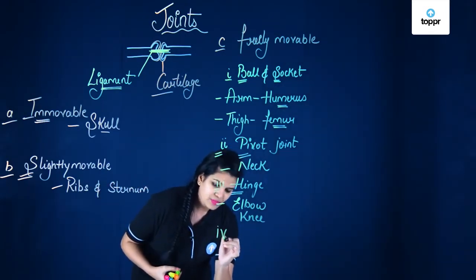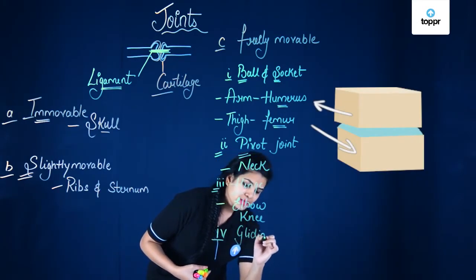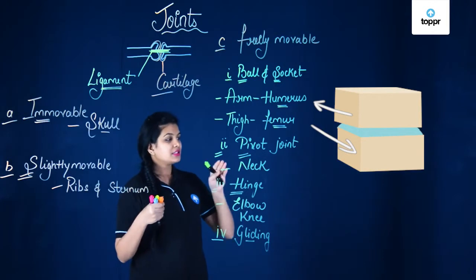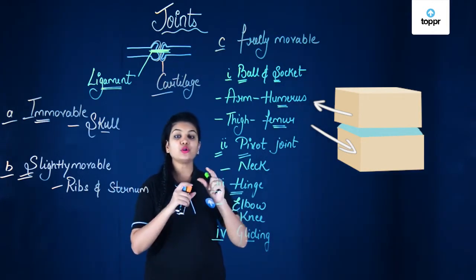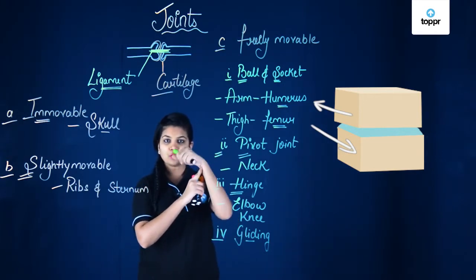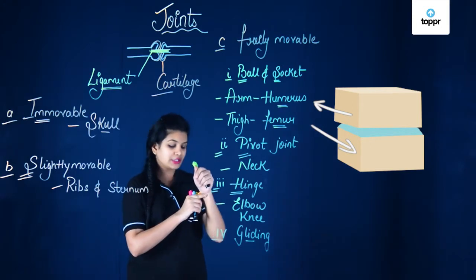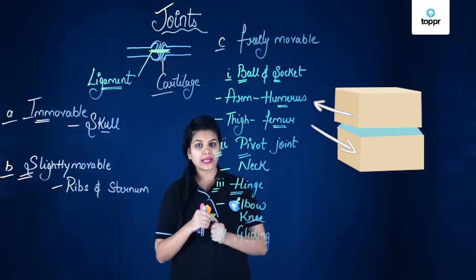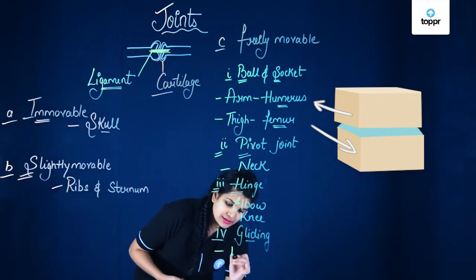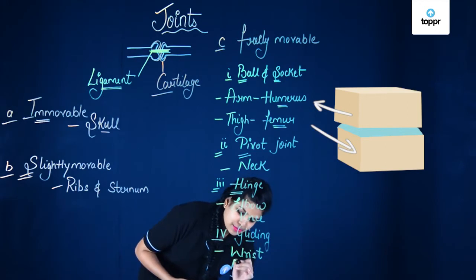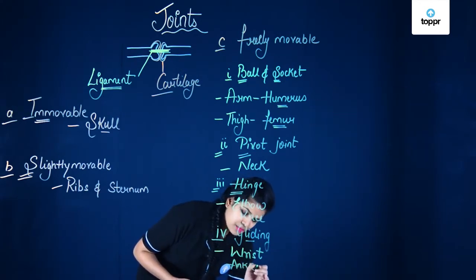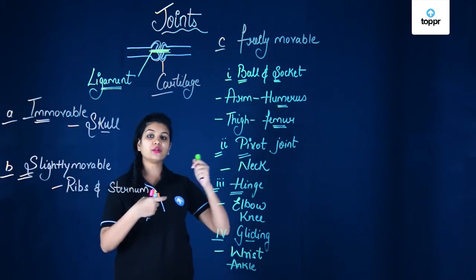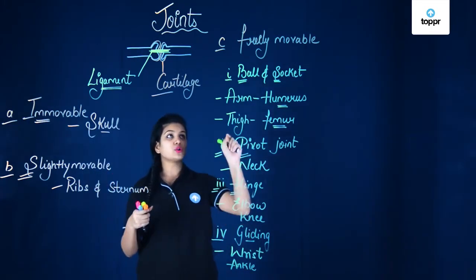The last type of freely movable joint is the gliding joint. In the gliding joint, two bones can glide over each other, showing only slight movement. For example, in your wrist you can move it in a gliding motion, and similarly your ankle. One bone glides over the other and hence we call it a gliding joint. The examples are the wrist and the ankle.